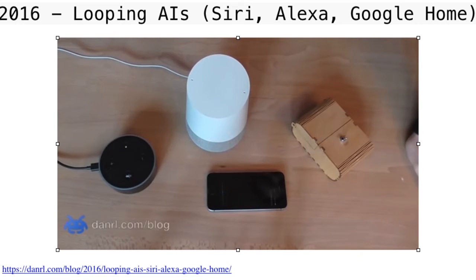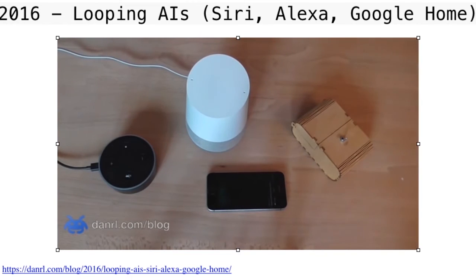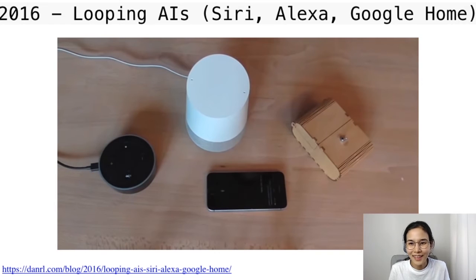In the piece, Alexa, Siri, and OK Google are set up so that Alexa reads a note that says to ask Siri about a 3 p.m. appointment, Siri's calendar contains a reminder to ask OK Google about 4 p.m., and OK Google's calendar says to have Siri read today's note — which loops back to Alexa. It just keeps looping forever.